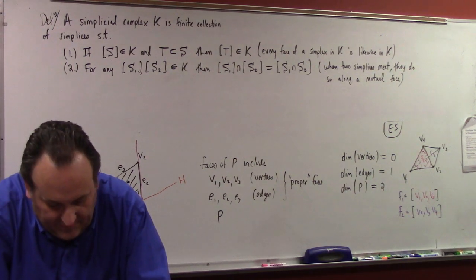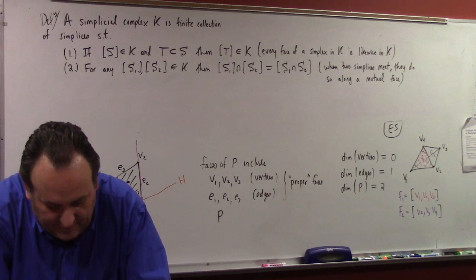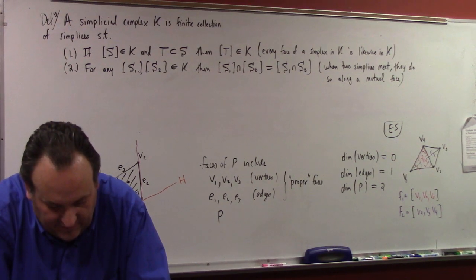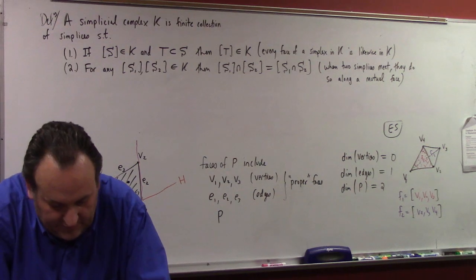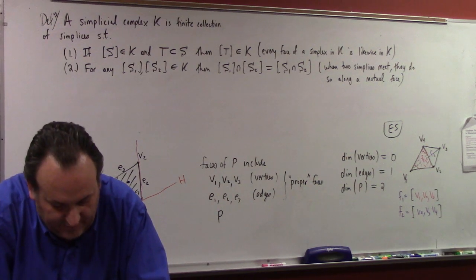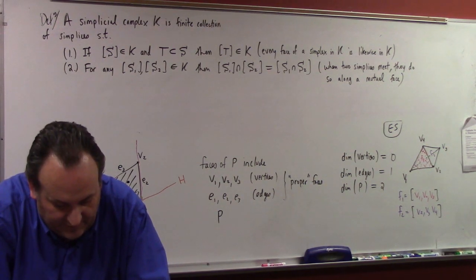We define the dimension of K to be the maximum dimension among all the simplices it contains. Intuitively, a simplicial complex is a set comprising a bunch of simplices that are glued together along their faces.